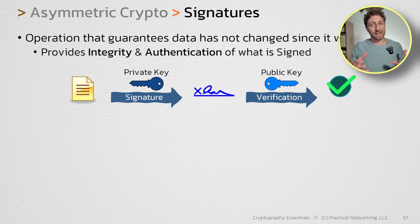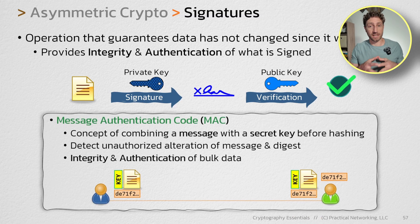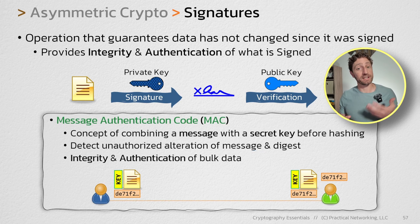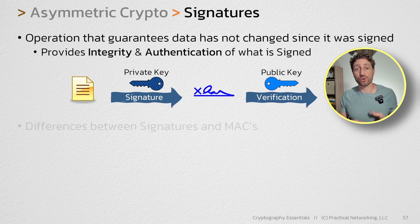So we talked about how signatures give you integrity and authentication. But earlier in the series, we talked about something else that also provides integrity and authentication — that something else was MACs, or message authentication codes. We showed you that you can use a MAC to detect any unauthorized alterations of a particular message and a digest, which gives you integrity and authentication of the message that you MAC'd. So there are two cryptographic operations that provide integrity and authentication. When would you use signatures and when would you use a MAC? To understand that, let's compare them both directly.